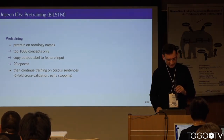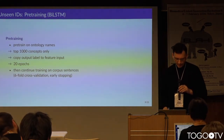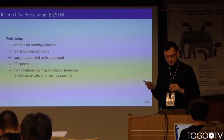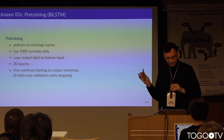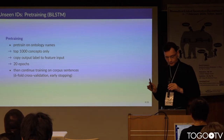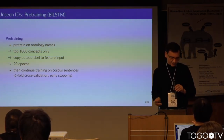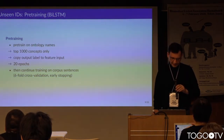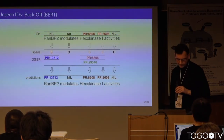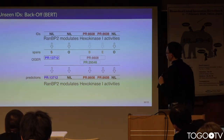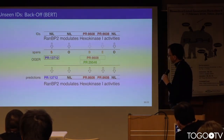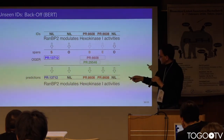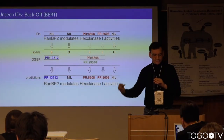One way we dealt with this problem is by analyzing a large set of 100,000 randomly picked PubMed abstracts with our entity recognition tool, identifying the most common concept IDs in that random subset, and using only those concepts in a pre-training phase. This was used for the BioSTM approach. For the BERT approach, we used the backup model where the entity recognition and entity-linking components cooperate, allowing a kind of voting on consistency between them.